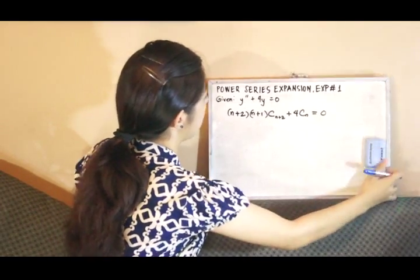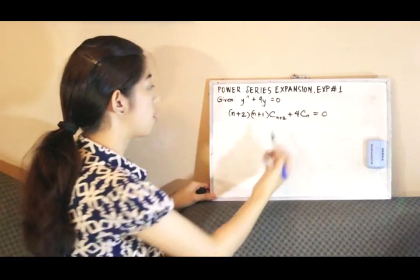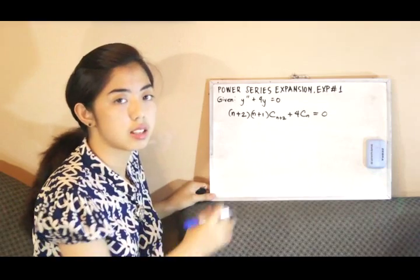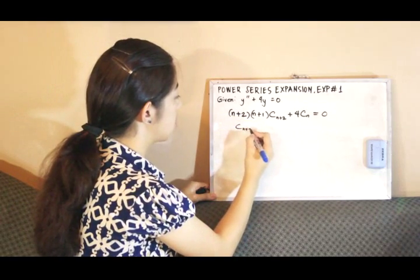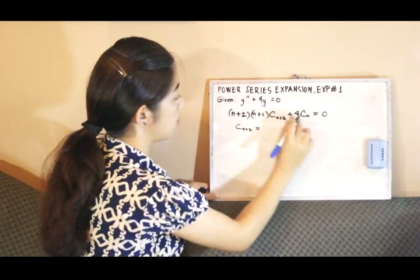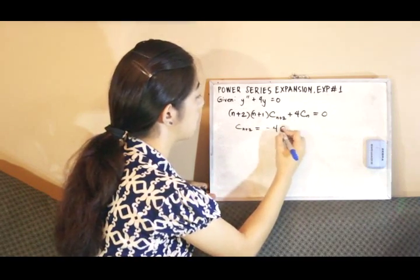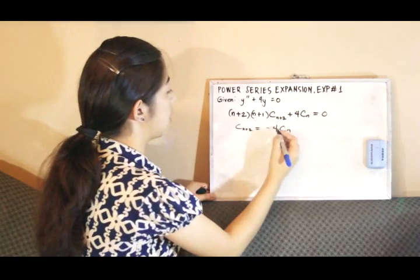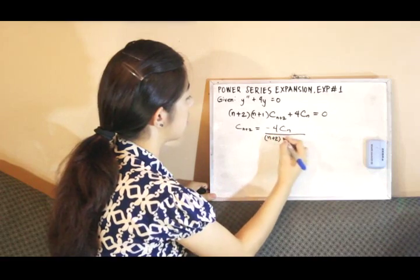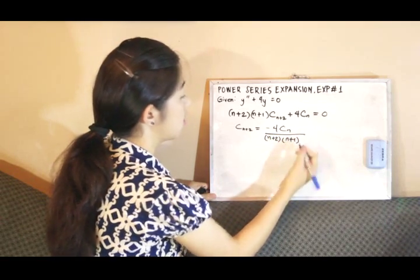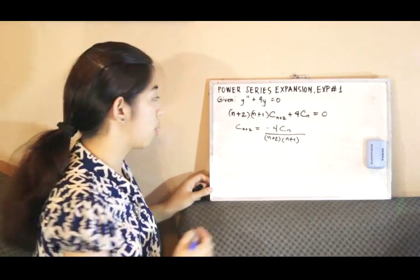Now we have to solve this for the highest index. To do that, we isolate c sub n plus 2: we transpose 4 c sub n, giving negative 4 c sub n, and divide by n plus 2 times n plus 1 on the other side. This is the recurrence relation of the differential equation.